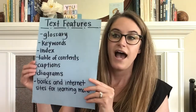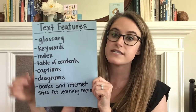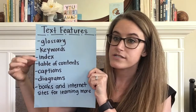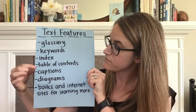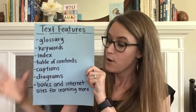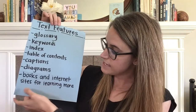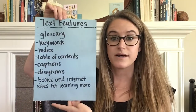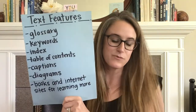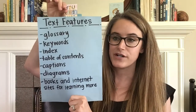This week and in the weeks before this we have been looking at text features in nonfiction books and we've been starting to keep a list or a chart of these text features. So we've seen things like the glossary, keywords, index, table of contents, captions, diagrams, and then in the lesson before this one we added books and internet sites for learning more. That was something we saw in this book that we've been reading this week. Let's review these different ones that we have been learning about.